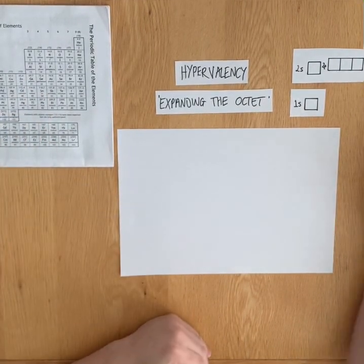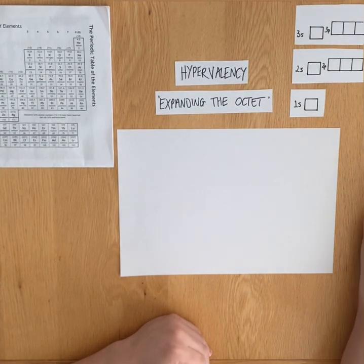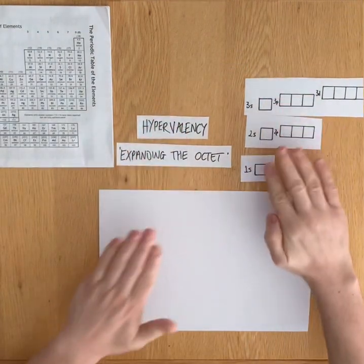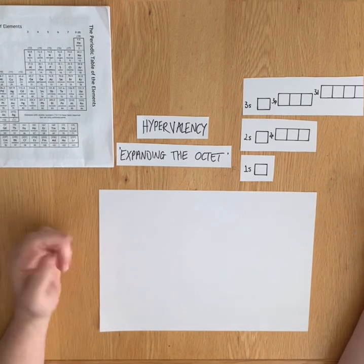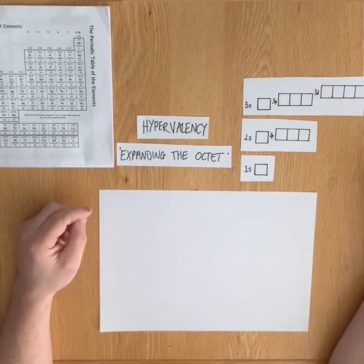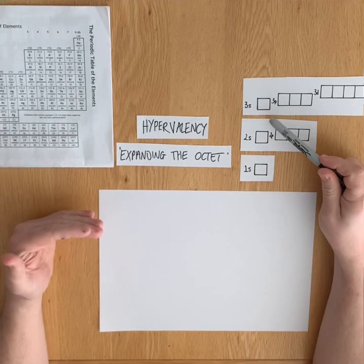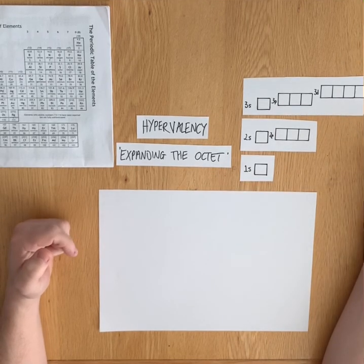Elements in the third period are occupying three electron shells. The third energy level or third shell is composed of an s, a p, and a d subshell: one s orbital, three p orbitals, and five d orbitals.